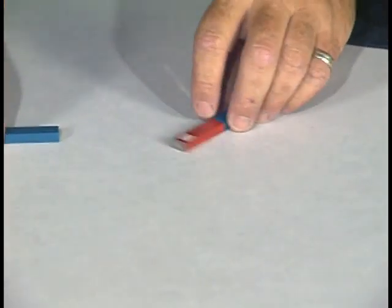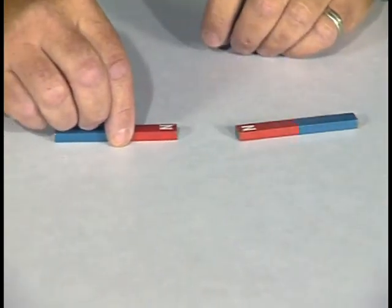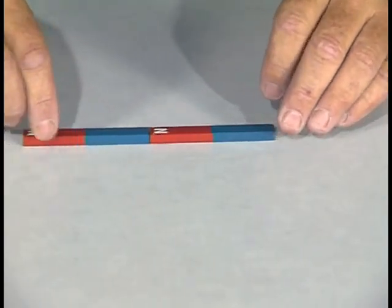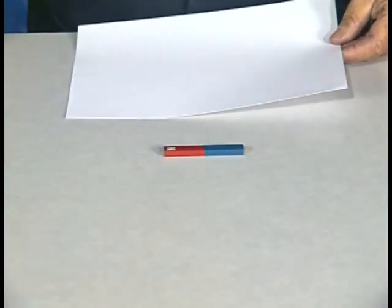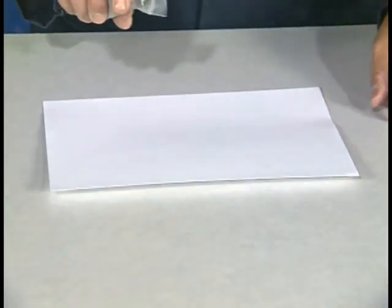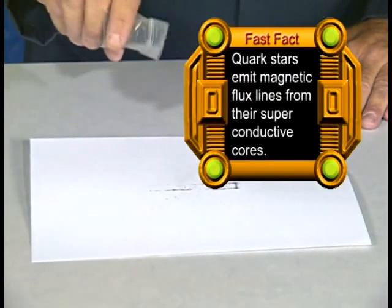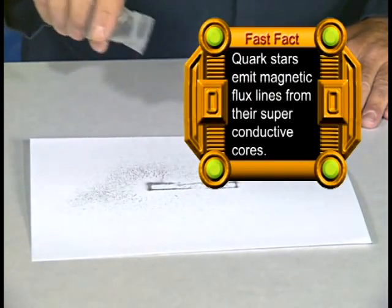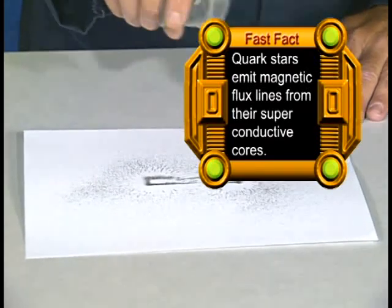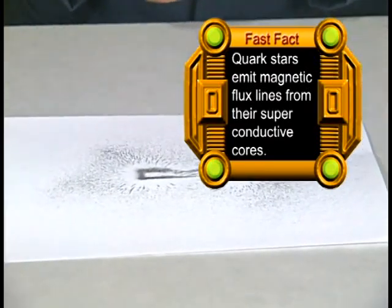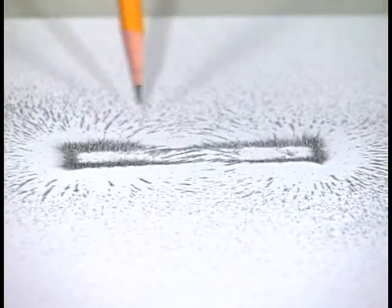As you can see, the magnets react long before the magnets even get close to each other. This is because the magnets put out magnetic lines of force called flux. Using iron filings, we can see the magnetic lines of flux around this magnet. These lines of filings indicate where the magnetic fields are located. You can see that the lines of flux extend out from the magnet in different directions.